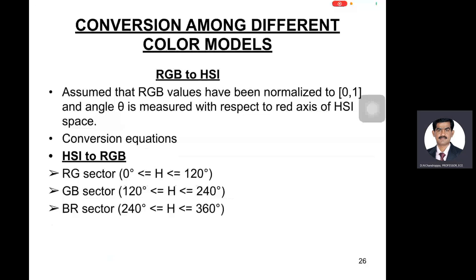For example, you can assume RGB model is available and is converted into the HSI model. The RGB values have been normalized to the parameters zero and one, and angle theta is measured with respect to the red axis of HSI space.